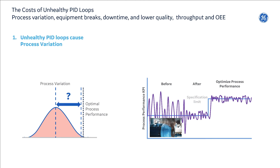This is important because unhealthy PID loops and control loops can create a lot of process variation and ultimately break equipment, cause downtime, reduce bad quality product, and reduce the production and throughput capacity in OEE and manufacturing plants.